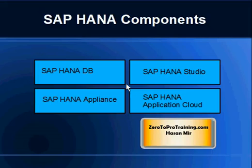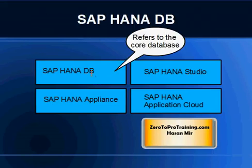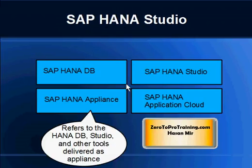When we talk about SAP HANA, we are talking about its components, which you can see on the screen. SAP AG offers these pieces of software under the umbrella of SAP HANA. The main component is the database itself — an in-memory database called SAP HANA DB. Then we have SAP HANA Studio, which refers to the modeling tools offered by SAP to model the data for SAP HANA DB.